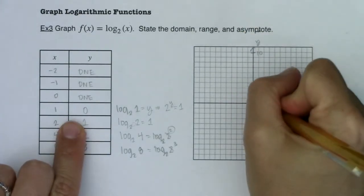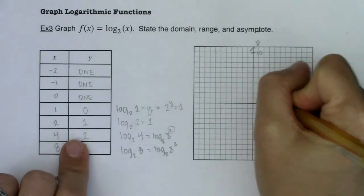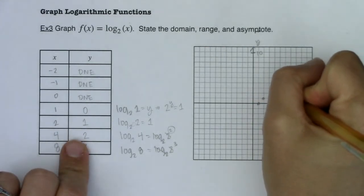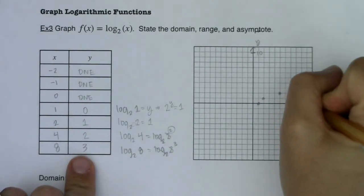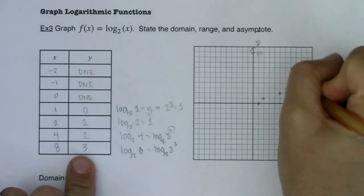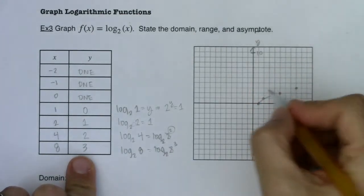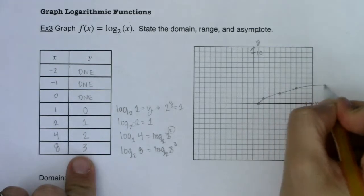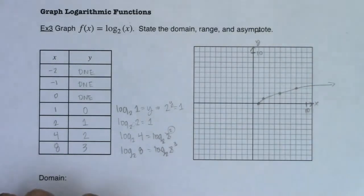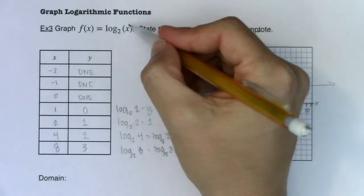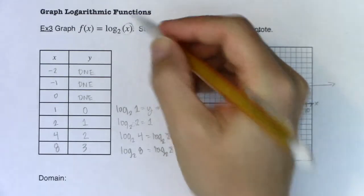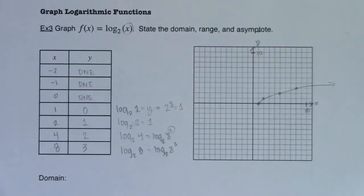All right, so we've got one zero, we've got two one, I've got four two, and I've got eight three. So I can see my logarithmic growth growing out that way. Now I mentioned this on example one, but it's worth repeating a few times.